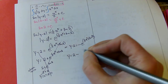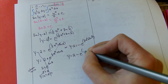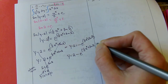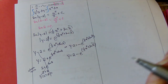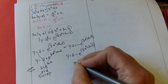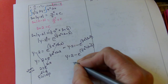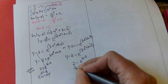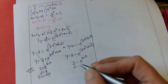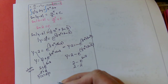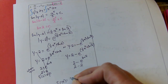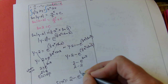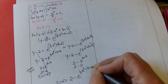Try this one: y equals 2 minus e to the 1/5 x to the 5th plus natural log of 2. When I plug in 0, we want to have 2 minus e to the natural log of 2, which is 2 minus 2, which is 0. So the correct function is 2 minus e to the 1/5 x to the 5th plus natural log of 2.